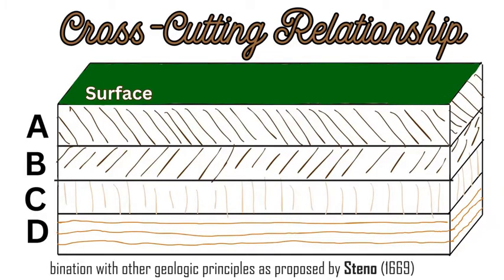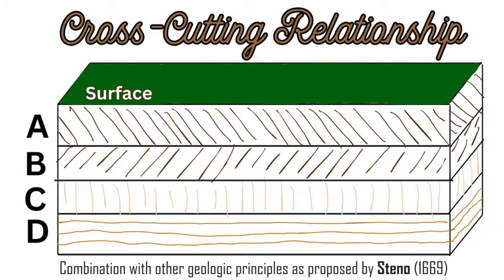In order to appreciate cross-cutting relationships in geology and in sedimentary rock layers, we need to understand Steno's other principles which relate to the relative dating of rocks, which includes the law of superposition, the law of original horizontality, and the law of lateral continuity.